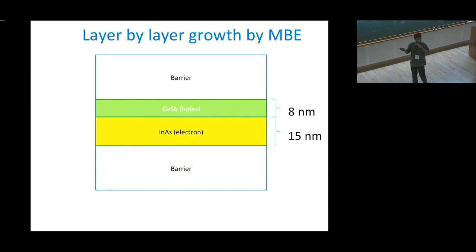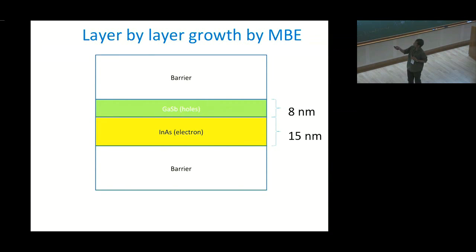We grow the material by molecular beam epitaxy, layer by layer — one atomic layer at a time. This is the cleanest way to grow. Here is the barrier, here is the indium arsenide, and here is the gallium antimonide. The total thickness is 15 plus 8, i.e., 23 nanometers, so it's effectively a two-dimensional system.